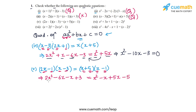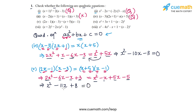Rearranging: 2x² on the left minus x² on the right gives x². Then −6x − x = −7x on the left, and −x + 5x = 4x on the right; bringing 4x left gives −11x. The constants 3 and −5 give +8. So the equation reduces to x² − 11x + 8 = 0, which is a quadratic equation.